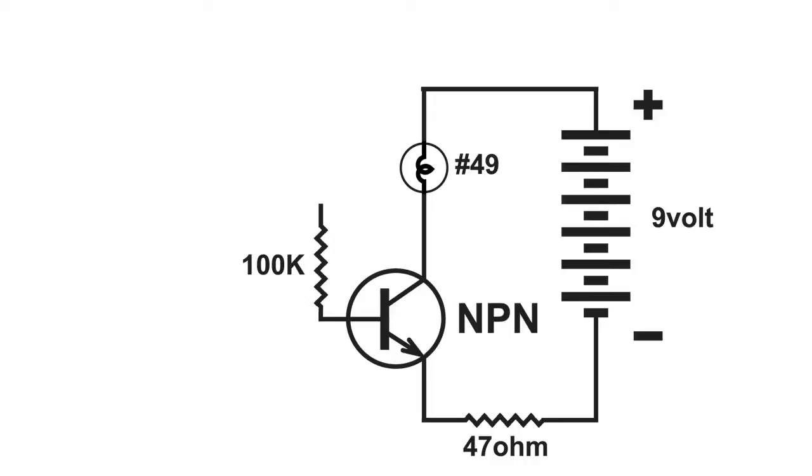And the 100k ohm resistor is going to be my biasing resistor. And that's going to get connected to the collector.